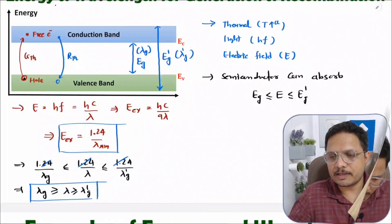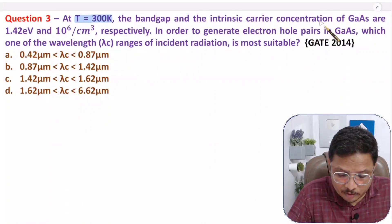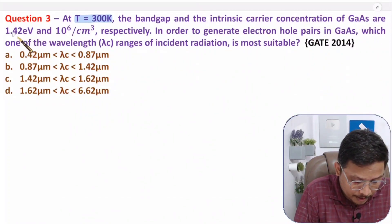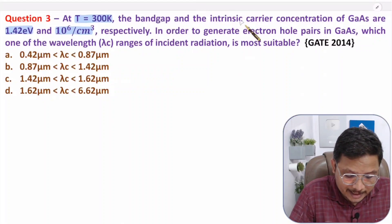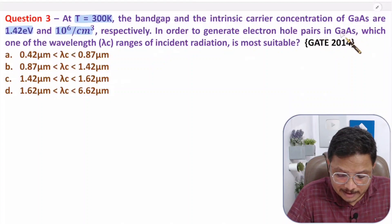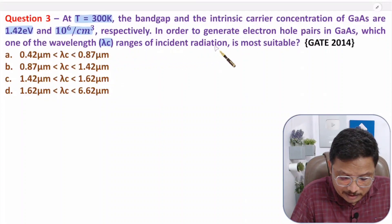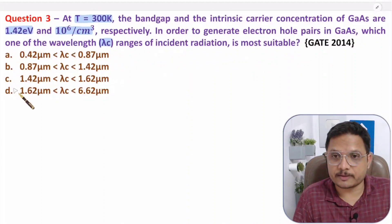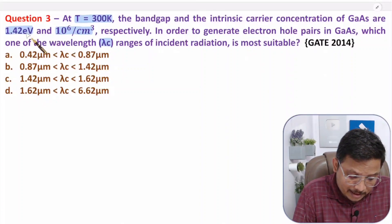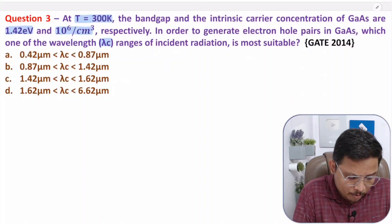Let us move on to the third interesting question. The third question is: at T = 300 Kelvin, the band gap and intrinsic carrier concentration of gallium arsenide are 1.42 electron volt and 10 to the power 6 per centimeter cube respectively. In order to generate electron-hole pairs in gallium arsenide, which wavelength range of incident radiation λC is most suitable? We need to find the most suitable range for λC out of four options. We don't need the intrinsic concentration — to find wavelength you just need the energy.